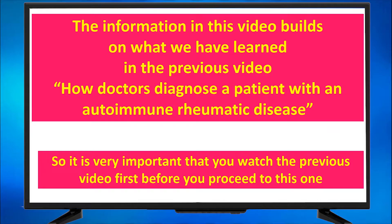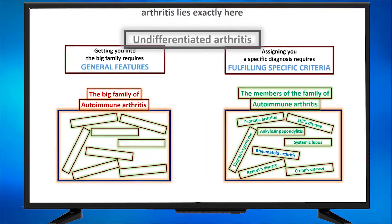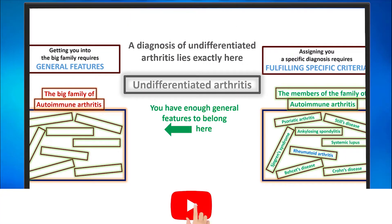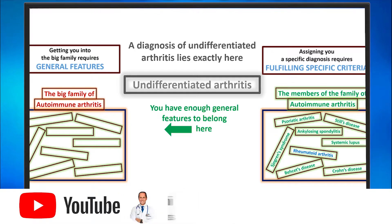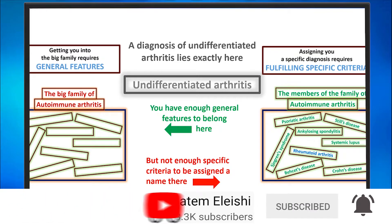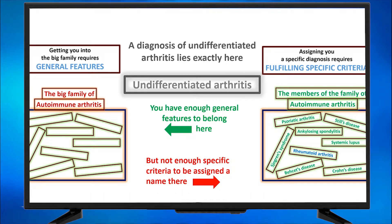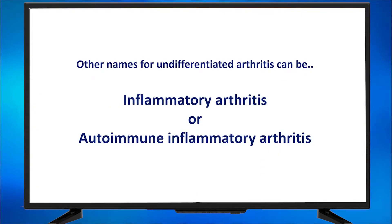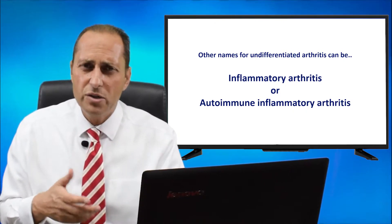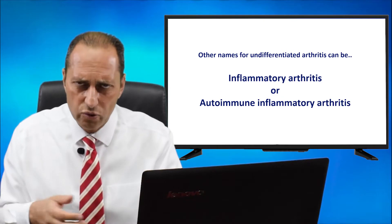It is very important that you watch the previous video first before you proceed to this one. A diagnosis of undifferentiated arthritis lies exactly here — you have enough general features to belong to the left side, the big family of autoimmune rheumatic diseases, but not enough specific criteria to be assigned a name as a specific member of this family. Other names for undifferentiated arthritis can be inflammatory arthritis or autoimmune inflammatory arthritis, which is a general term for any general autoimmune rheumatic disease.